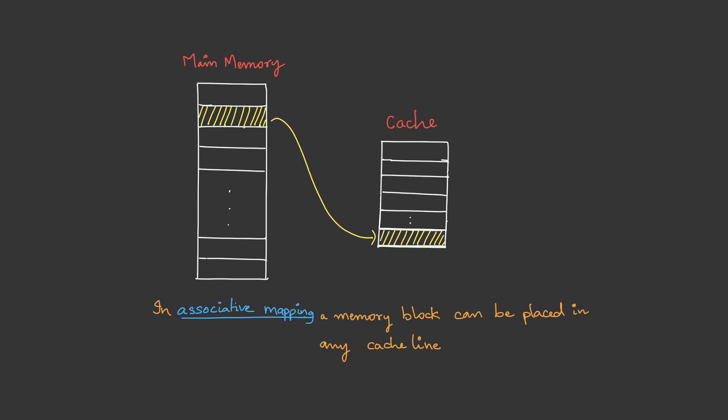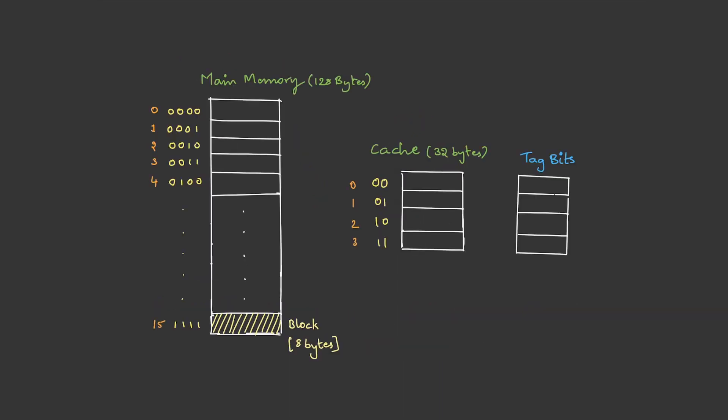To understand this in depth, let me take the previous example used in direct mapping. We have a main memory of size 128 bytes, cache size 32 bytes, and block size 8 bytes. In associative mapping there is no restriction on placement, so I can place a block anywhere.